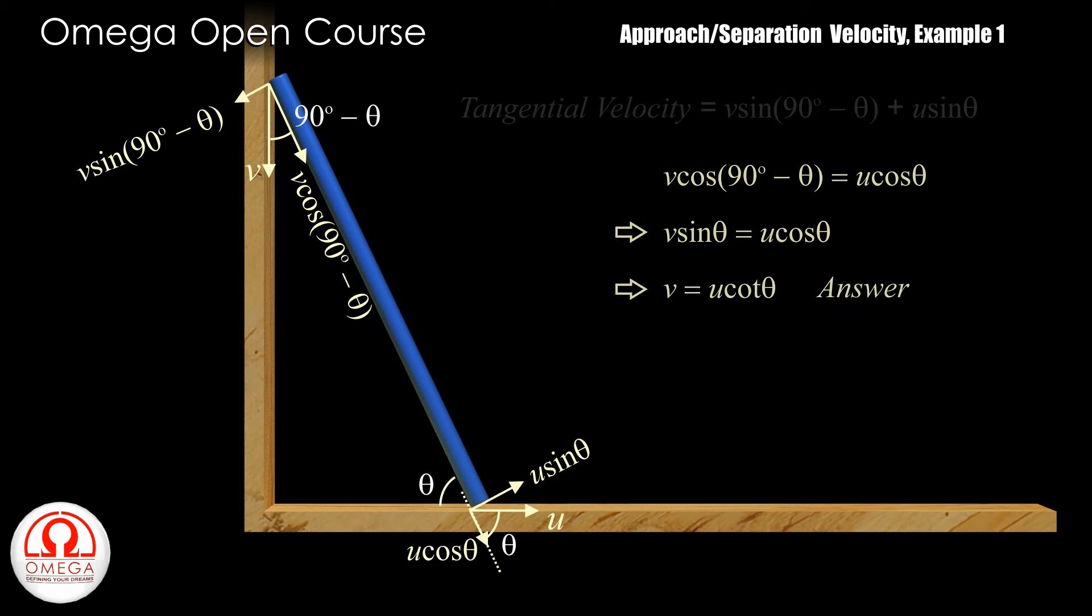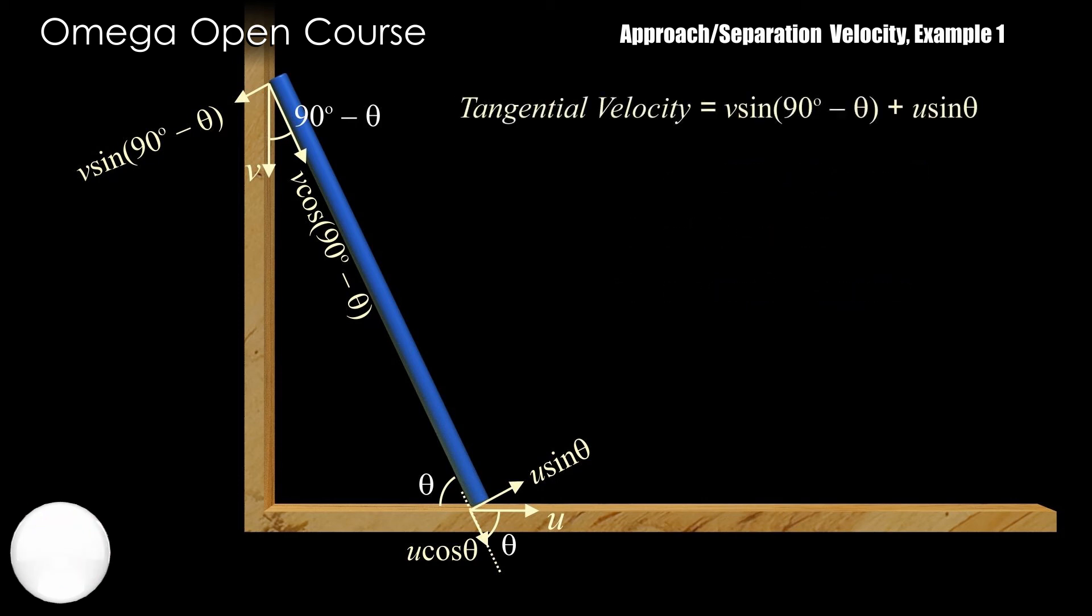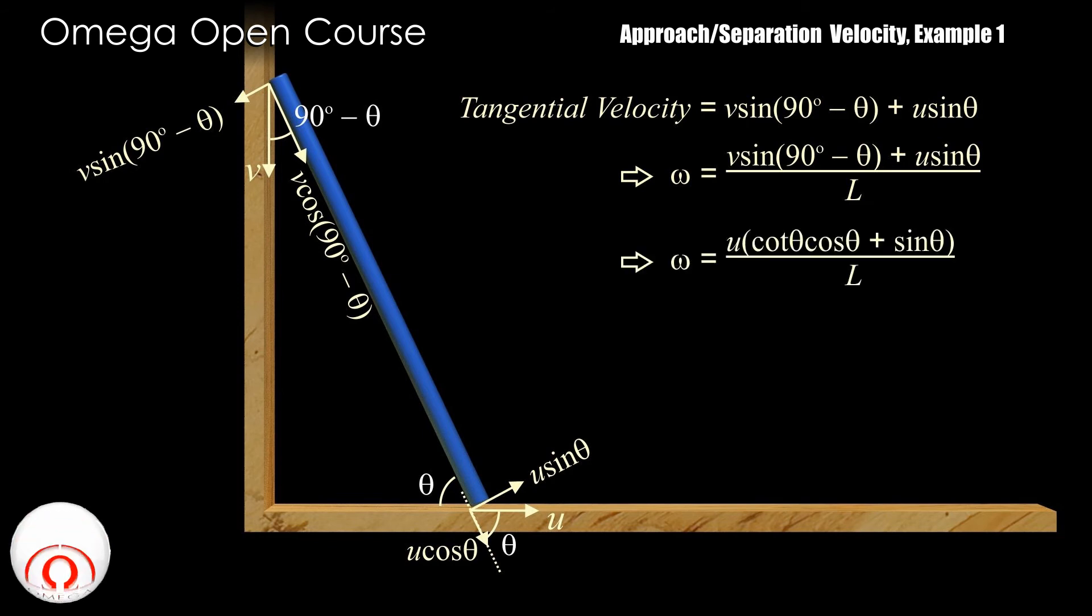The tangential speed of the upper end with respect to the lower end is v sin 90 degree minus theta plus u sin theta. Therefore, the angular speed of the rod is v sin 90 degree minus theta plus u sin theta by L. Putting v is equal to u cot theta and sin 90 degree minus theta is equal to cos theta,